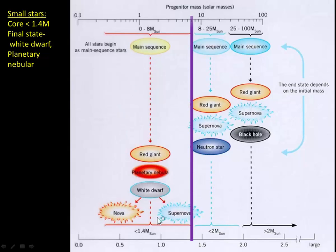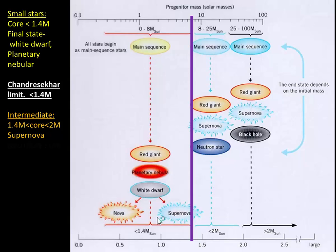Which is called the Chandrasekhar limit. So less than 1.4 solar masses, it will become a white dwarf and a planetary nebula. In an intermediate size star, less than 2 solar masses and greater than 1.4 solar masses, it will become a supernova and turn into a neutron star.